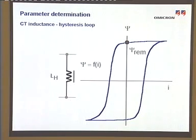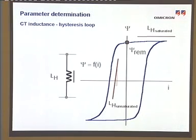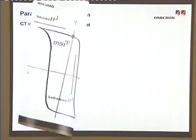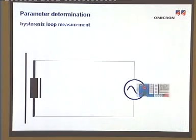Remanence, non-saturated and saturated magnetizing inductance are characteristic parameters which are often only available with difficulty. Because of this, the following procedure for direct measurement via relay test equipment was developed. A sinusoidal voltage is connected to the secondary transformer terminal. The primary test system, CPC100, is designed particularly for CT and VT testing.